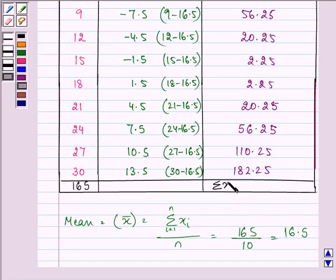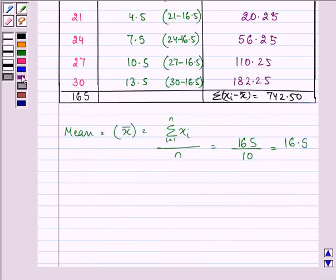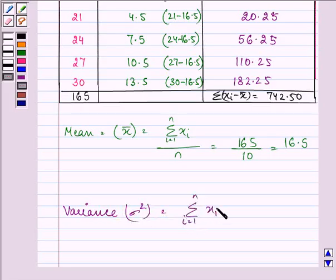Right, so variance is equal to summation xi minus x bar the whole square divided by n.